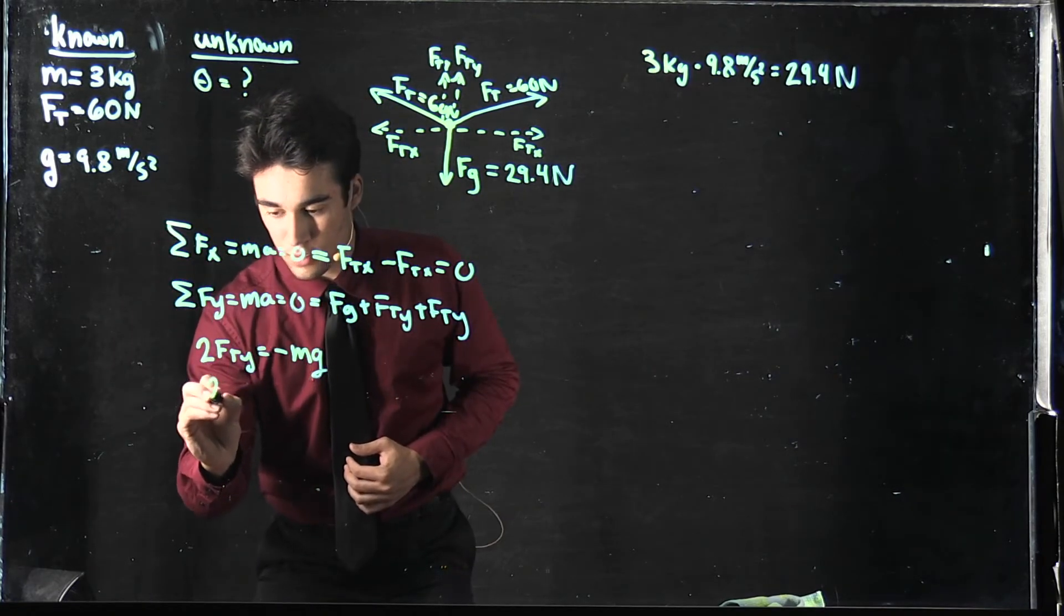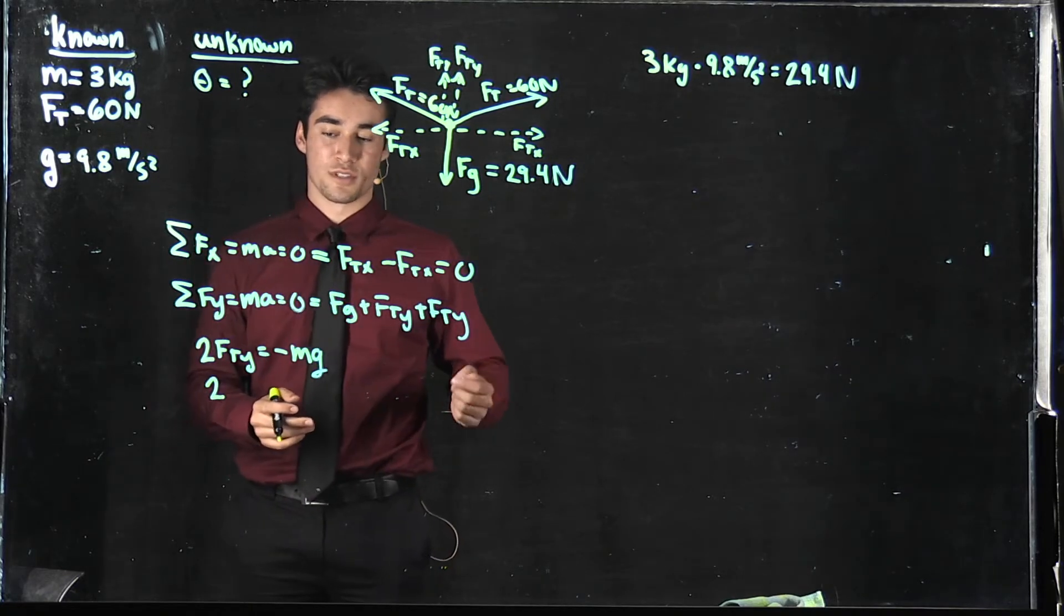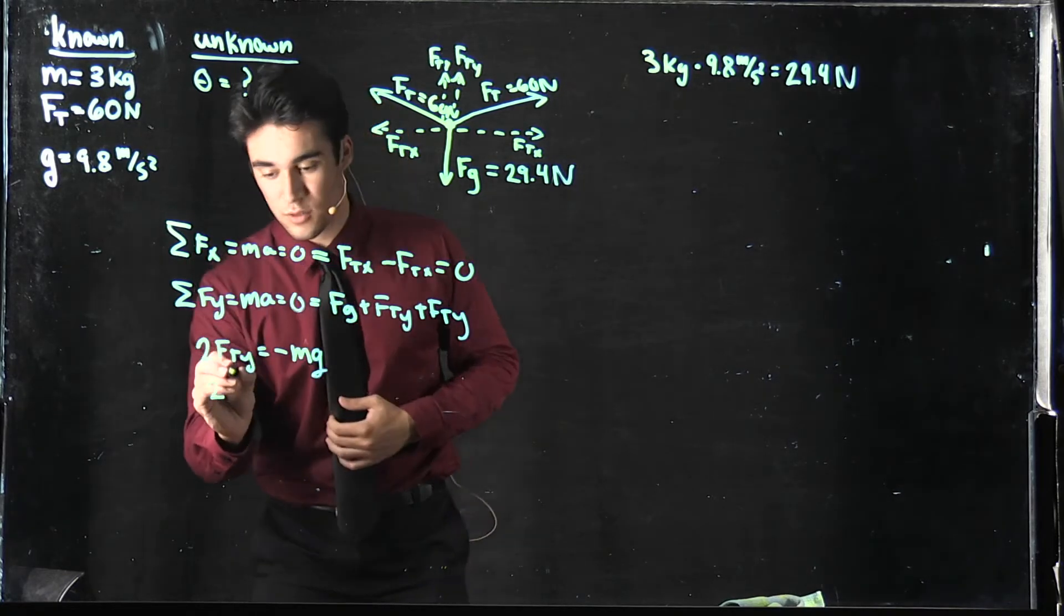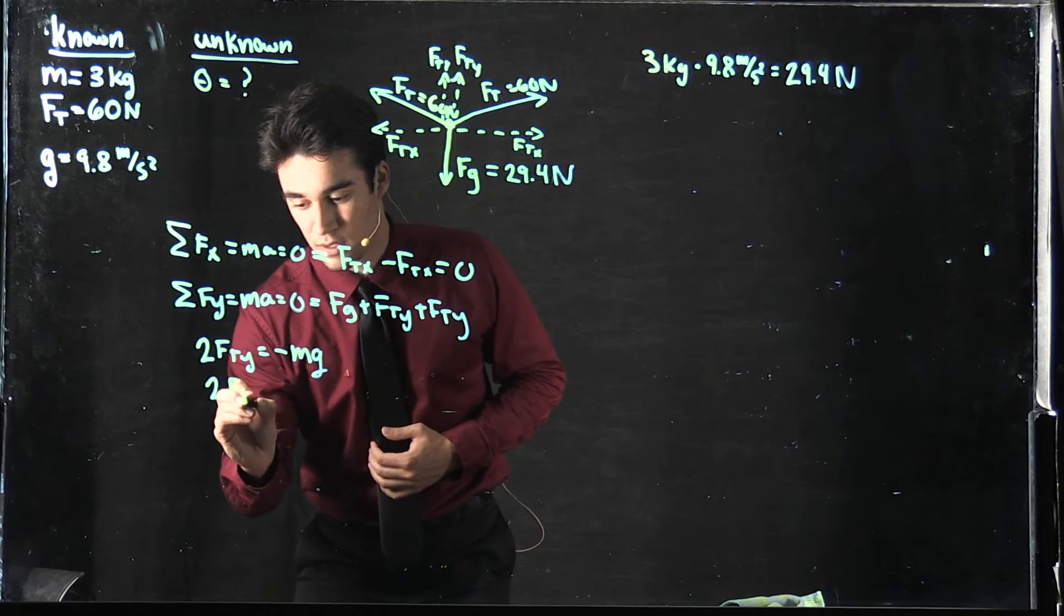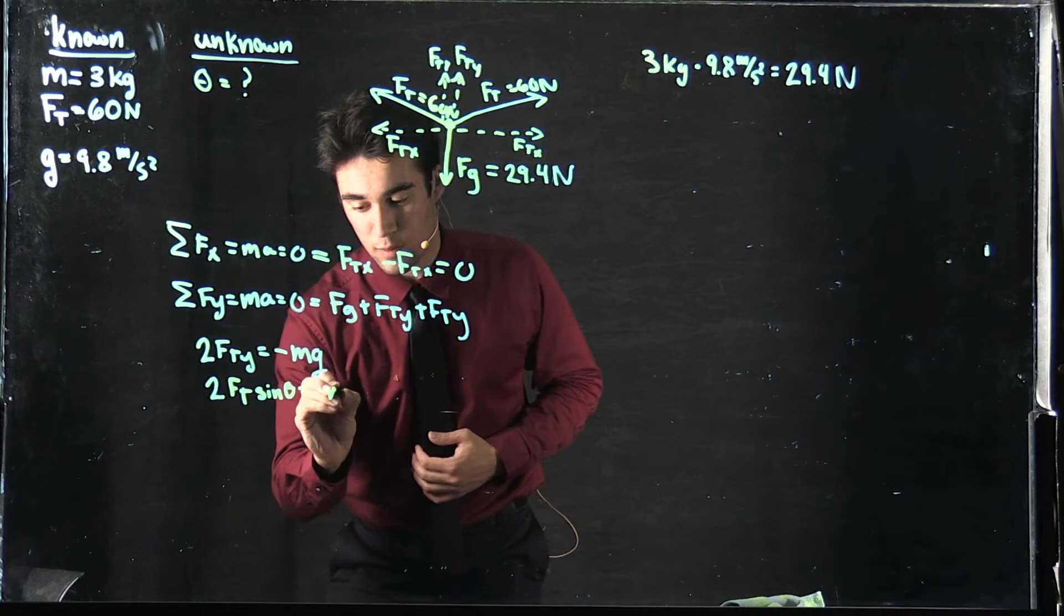To find the force of tension in the y direction, we use Ft sin theta. So 2 times force of tension sin theta equals negative mg.